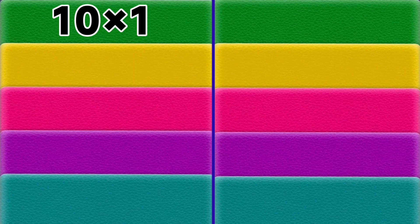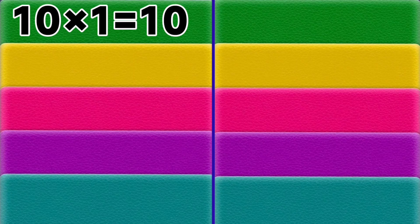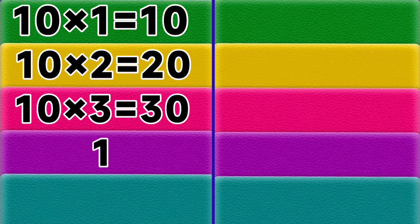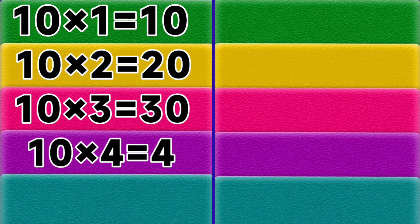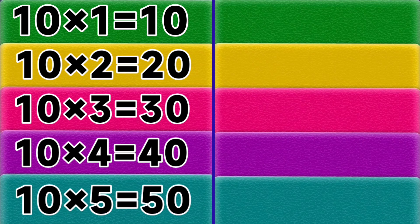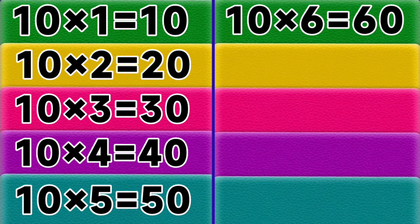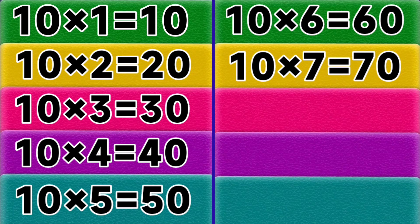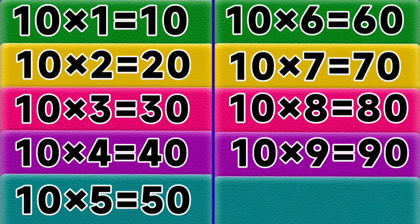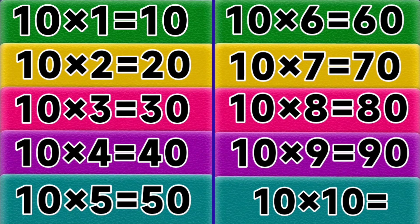10 ones are 10, 10 twos are 20, 10 threes are 30, 10 fours are 40, 10 fives are 50, 10 sixes are 60, 10 sevens are 70, 10 eights are 80, 10 nines are 90, 10 tens are 100.